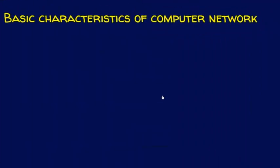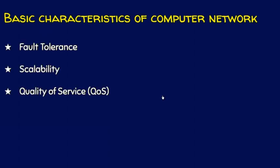There are four basic characteristics any computer network should possess: fault tolerance, scalability, quality of service, and security. A computer network should be fault-tolerant, it should be scalable, it should provide quality of service, and it should also provide security. We shall see each of these in a detailed manner.